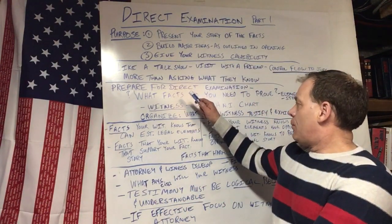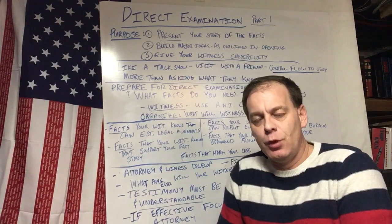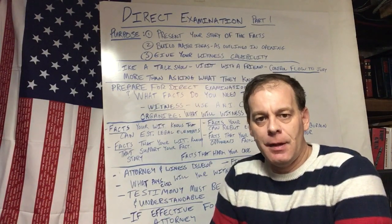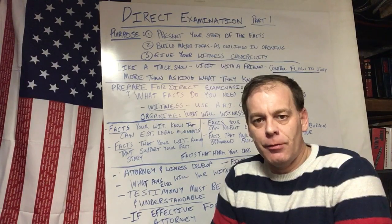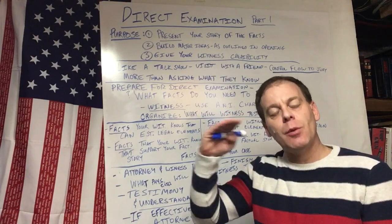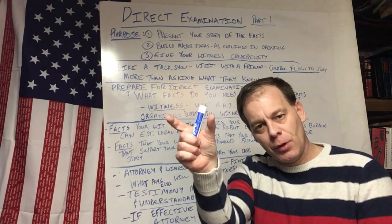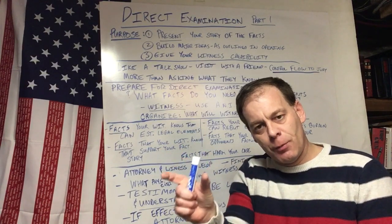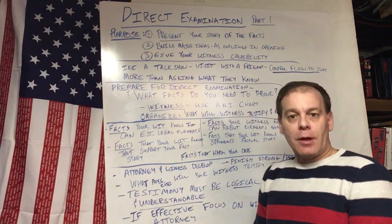Direct examination is more than just asking people what they know — it is controlling the flow of information. If I ask, 'Officer, were you working that night? Tell us everything that happened,' that's not going to be effective, because in about three minutes the jury will be falling asleep as the witness rambles. You need to take a large chunk of information and break it down — question, question, question — to move along and control the flow from one point to the next. That's what effective direct examination does.